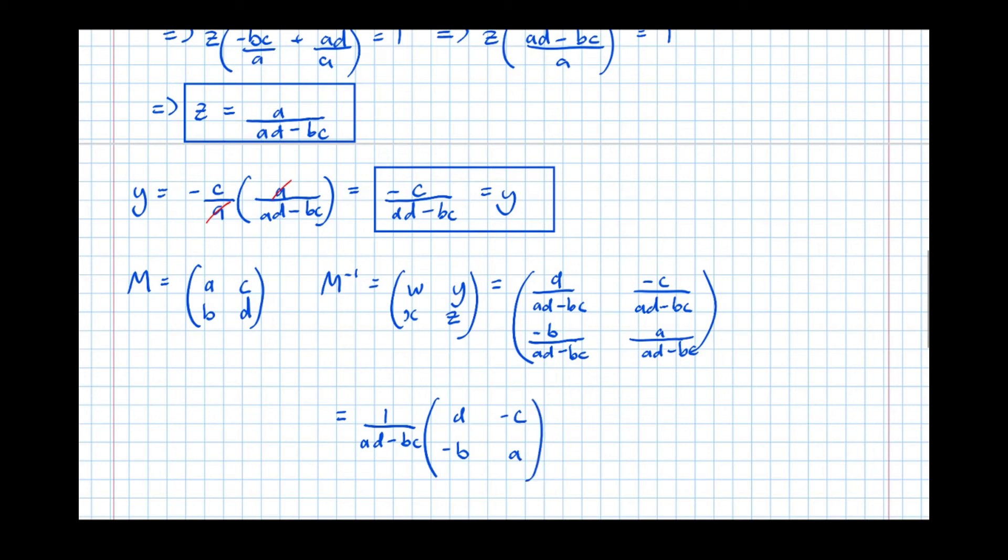And there's the general inverse matrix. And you'll notice that this here at the front, this bit here, 1 over AD minus BC. Well, AD minus BC is just the determinant of M. Equals 1 over the determinant of M times D, minus B, minus C, A. And let's compare this to the original matrix. So we've got there A, B, C, D. Notice that B and C have just had the signs swapped. And A and D on the leading diagonal have swapped places. So this long-winded method has shown us how to find the inverse of a 2 by 2 matrix.